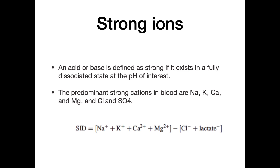Strong ions are acids or bases that exist in a fully dissociated form. Common strong ions include sodium, potassium, calcium, magnesium, chloride, and sulfate. The strong ion difference (SID) is calculated as: sodium plus potassium plus calcium plus magnesium minus chloride minus lactate.